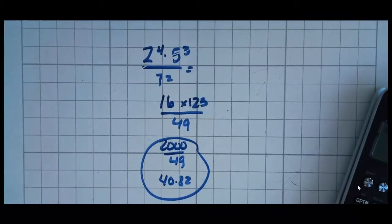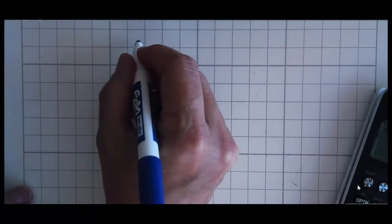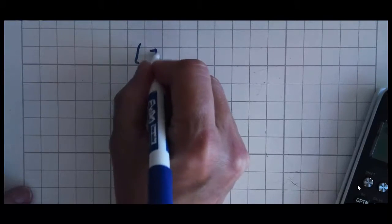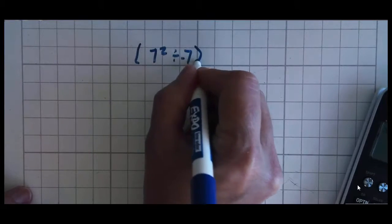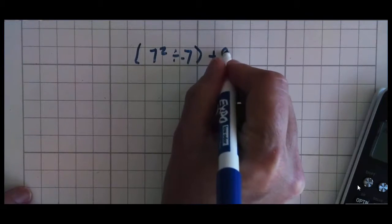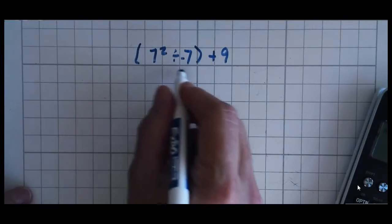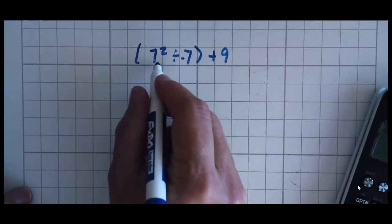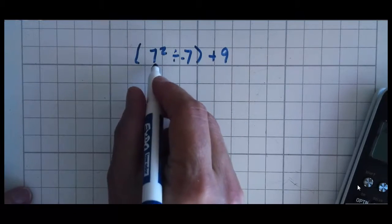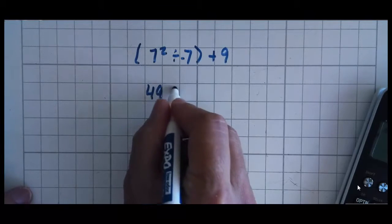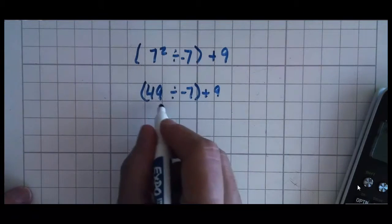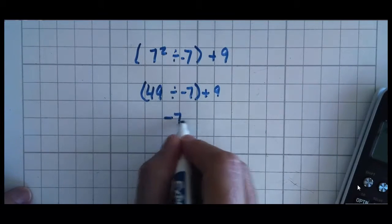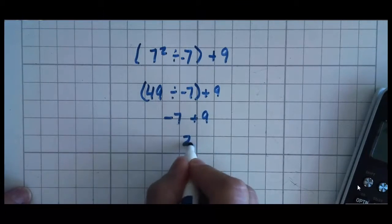But they can get involved. When they get involved, it's important that you take them one step at a time and that you don't get ahead of yourself. So, for instance, this problem: 7 squared divided by negative 7, and then all of that is plus 9. Your order of operations tells you you're going to do what's in parentheses first, and you're going to do exponents. So 7 squared is 49 divided by negative 7 plus 9. 49 divided by negative 7 is negative 7. And negative 7 plus 9 is 2.